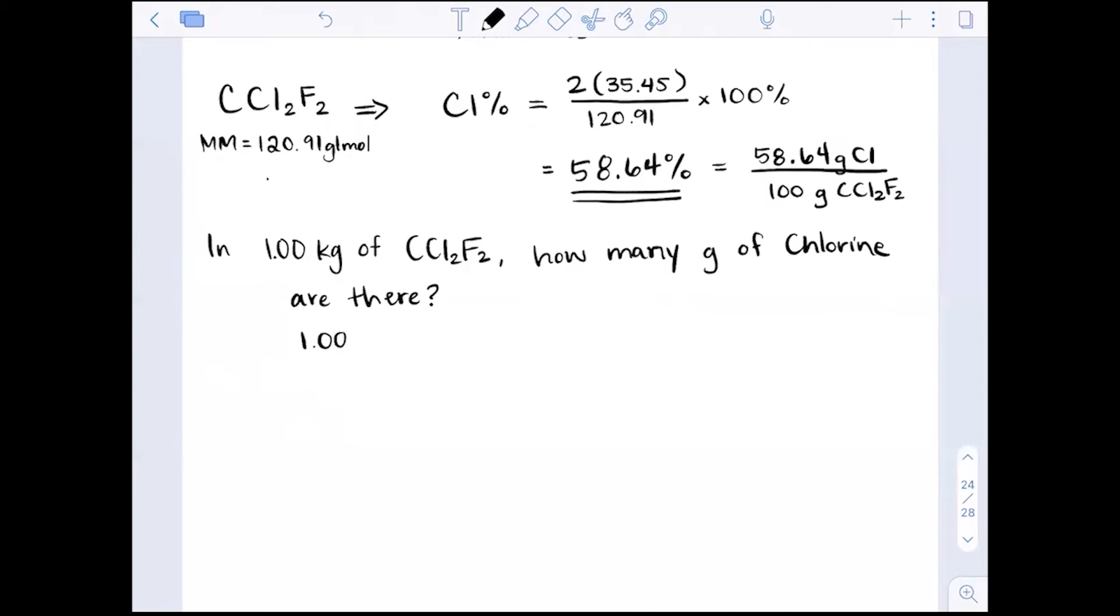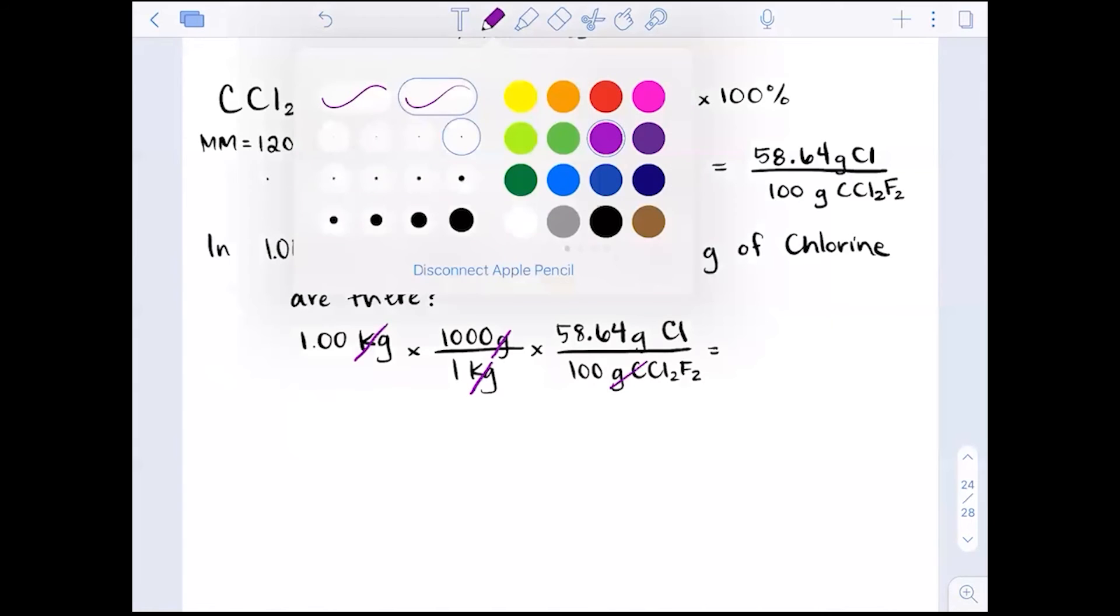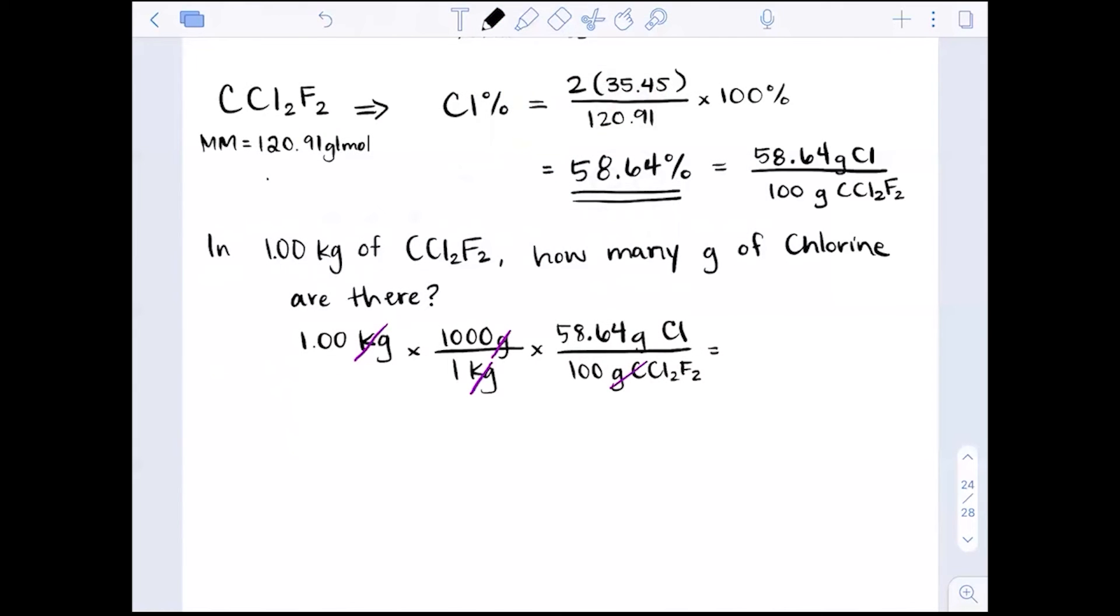In 1.00 kilograms of CCl2F2, how many grams of chlorine are there? Now you could take this and go from kilograms to grams of CCl2F2, and then change it into moles and figure out a mole ratio and then go to grams again. But because we have this mass percentage, we already have a conversion factor that says there are 58.64 grams of chlorine for every 100 grams of CCl2F2.